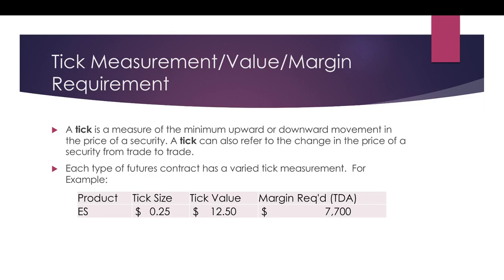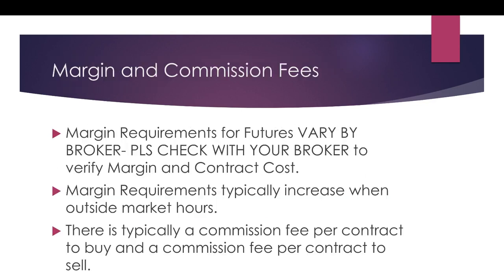A tick is a measurement of the minimum upward or downward movement in the price of a security. A tick can also refer to the change in price of a security from trade to trade. Tick is defined by instrument — each type of futures contract has a specific tick measurement. For example, ES (the main contract, not the micro): tick size is 25 cents, tick value is $12.50. So for a quarter up, you get $12.50; for a quarter down, it's a $12.50 loss. Margin required for intraday trading is $7,700. Margin varies by broker and varies for intraday versus outside of regular stock market trading hours.